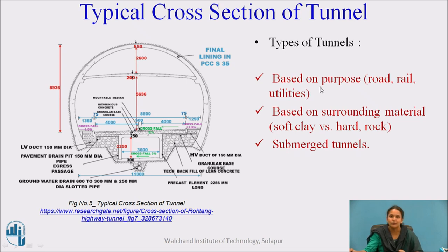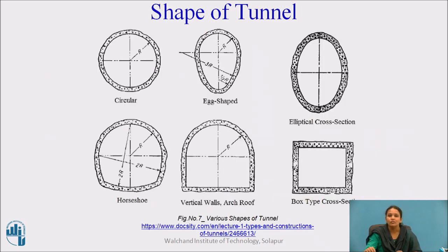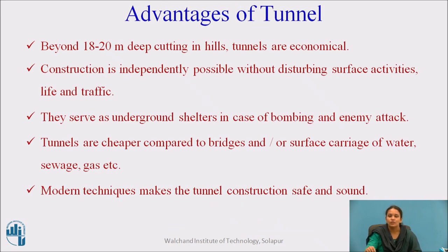Tunnels are classified based on purpose, surrounding material and submerged tunnels. Based on purpose: road and railway utilities. Based on surrounding materials: whatever material is present at that site. Submerged tunnels are used in underground situations. Tunnels are also constructed in different shapes: circular, X-shaped, elliptical cross section, horseshoe, vertical wall and box type cross section. The shape is decided according to the purpose and site conditions.